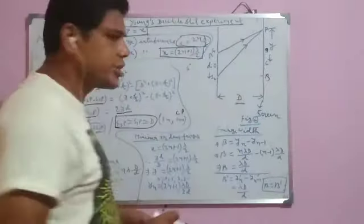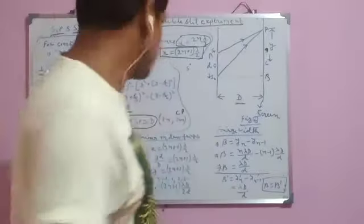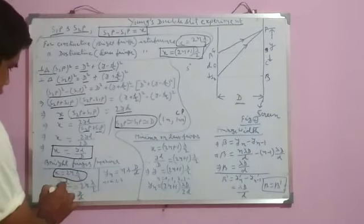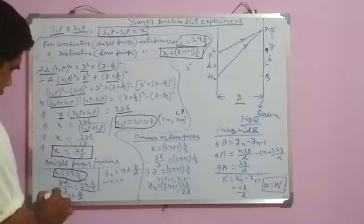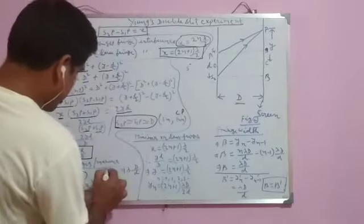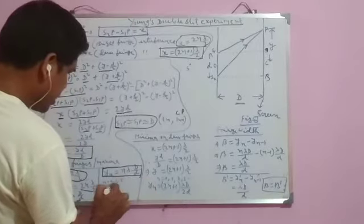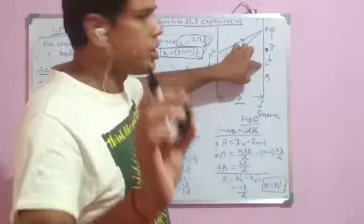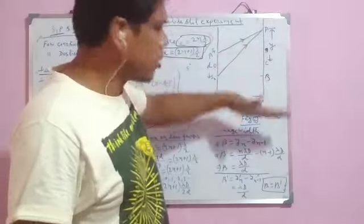For bright fringes or maxima, the path difference must be an even multiple of λ/2, so X = 2nλ/2 = nλ. Putting yd/D = nλ, we get Y = nλD/d. In general, YN = NλD/d, where N = 0, ±1, ±2, ... Points above C are positive and points below are negative.